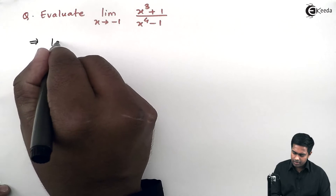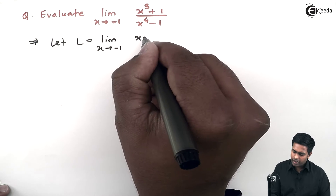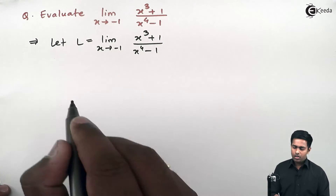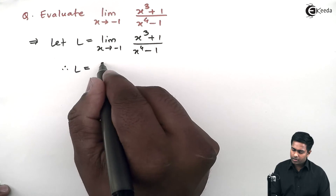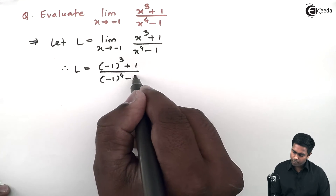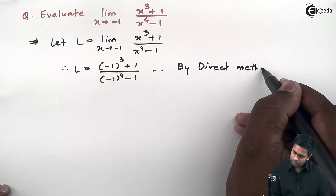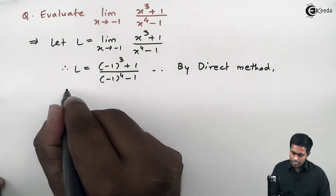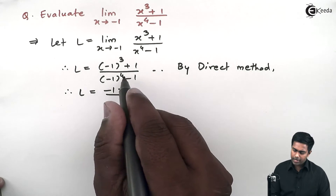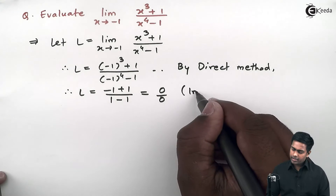Let L equal to this limit x tends to minus 1 of (x³ + 1) upon (x⁴ - 1). By direct method we substitute: (-1)³ + 1 upon (-1)⁴ - 1. This becomes (-1 + 1) upon (1 - 1), which gives us 0 by 0 — the indeterminate form.